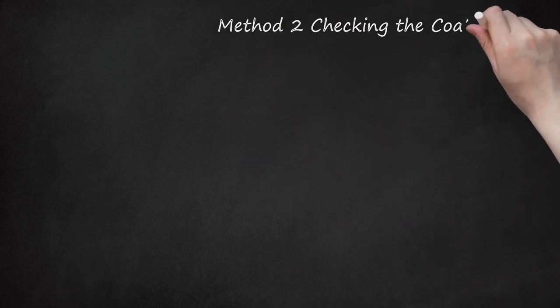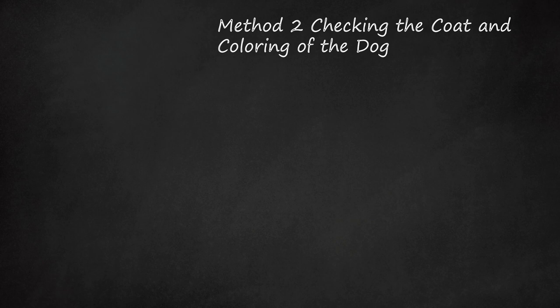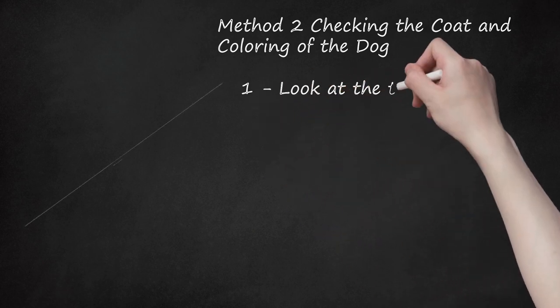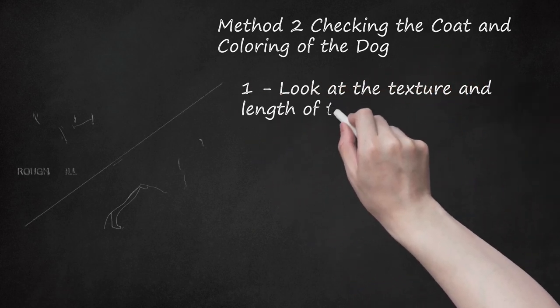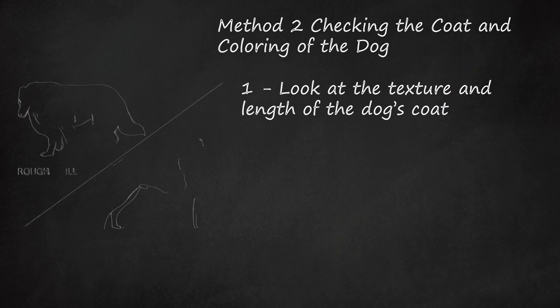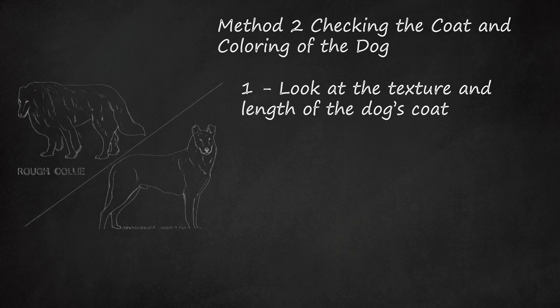Method 2: Checking the Coat and Coloring of the Dog. Look at the texture and length of the dog's coat. Collies come in two different varieties, the Rough Collie and the Smooth Collie. The coat of the Smooth Collie is short, dense, and flat. The Rough Collie has a long, well-fitted coat that feels a bit more harsh. The Rough Collie has a thick, long coat all over its body, save its head and legs.